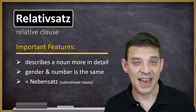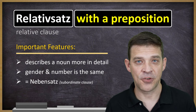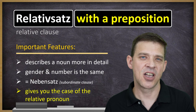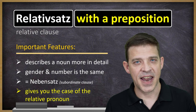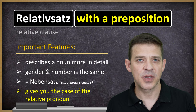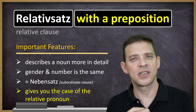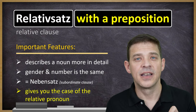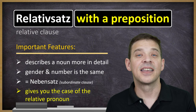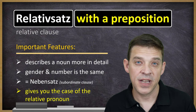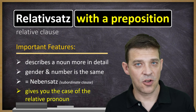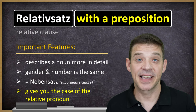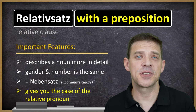Here we talk about Relativsätze mit Präpositionen. And there is one more important feature: the preposition gives you the case of the relative pronoun. Not in all situations, but in most situations, because most prepositions require a specific case. Therefore, a relative clause with a preposition gives you in most situations already the case of the relative pronoun. There are some special rules, which will be explained later in the bonus tip. But let's do first an example.